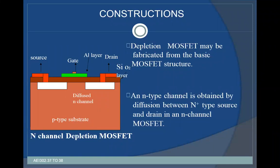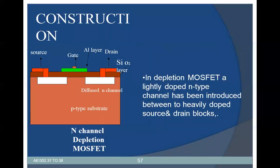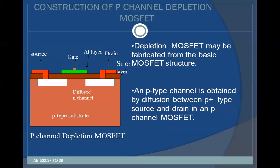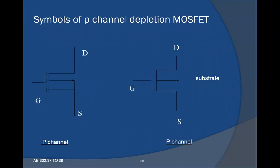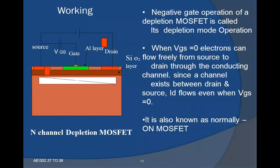In the depletion MOSFET, it may be fabricated from the basic MOSFET structure. An N-type channel is obtained by diffusion between the N-type source and drain in an N-channel MOSFET. Similarly, a P-channel depletion MOSFET may be fabricated: a P-type channel is obtained by diffusion between the P-type source and drain. P-channel depletion MOSFETs are made using an N-type substrate and diffusing a lightly doped P-type channel between two heavily doped P-type source and drain blocks. These are the symbols of P-channel depletion MOSFET.